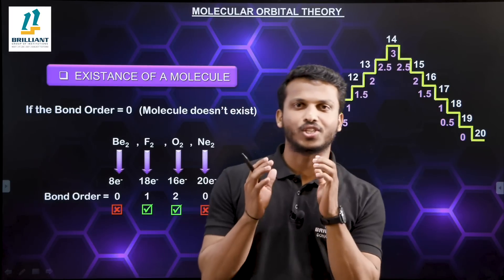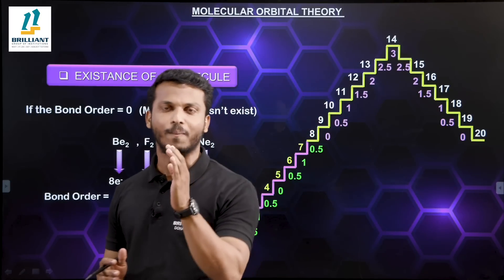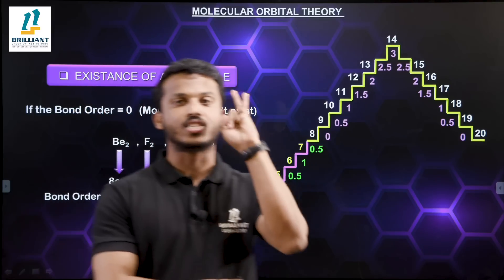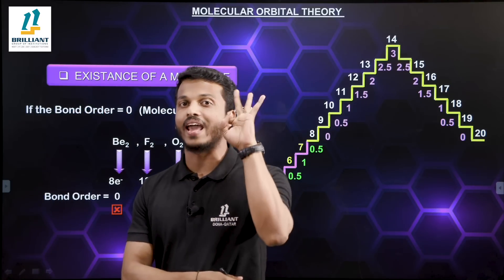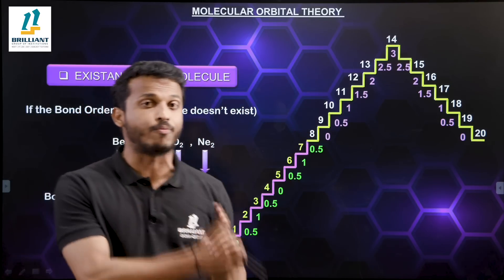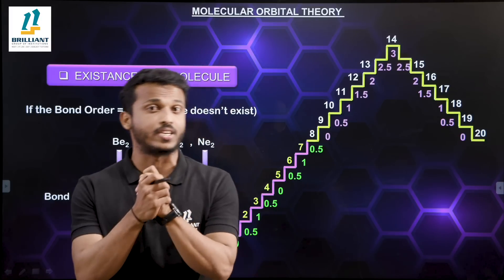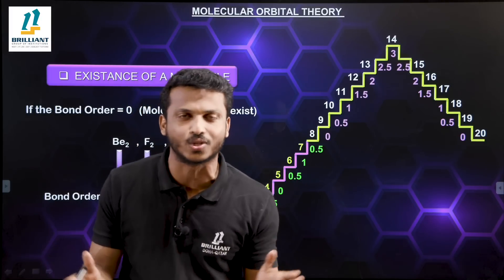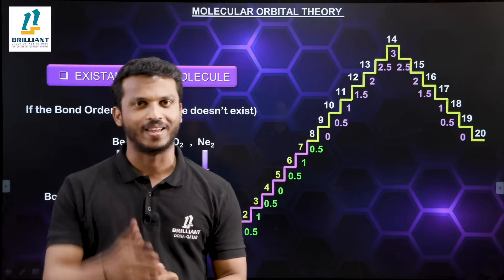So that is the shortcut for molecular orbital theory covering bond order calculation, stability of a molecule, and existence of a molecule. It is very helpful for your upcoming JEE, NEET, and IIT examinations. Keep practicing. Thank you, bye.